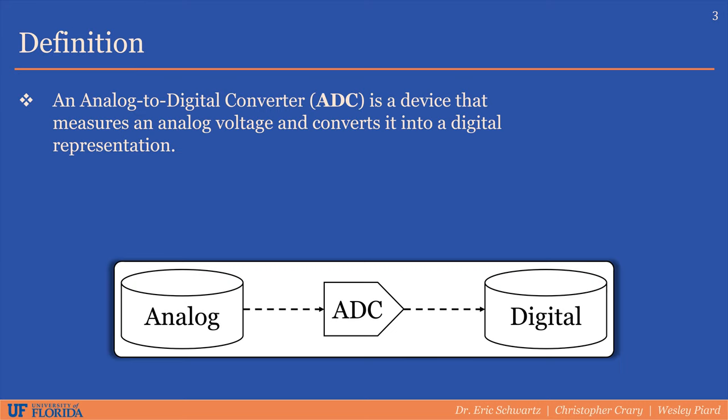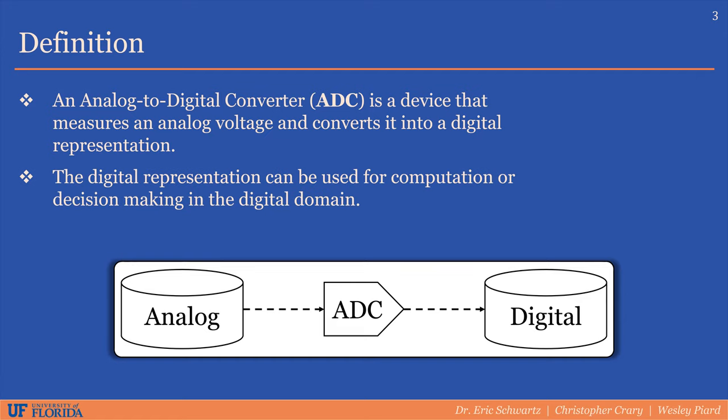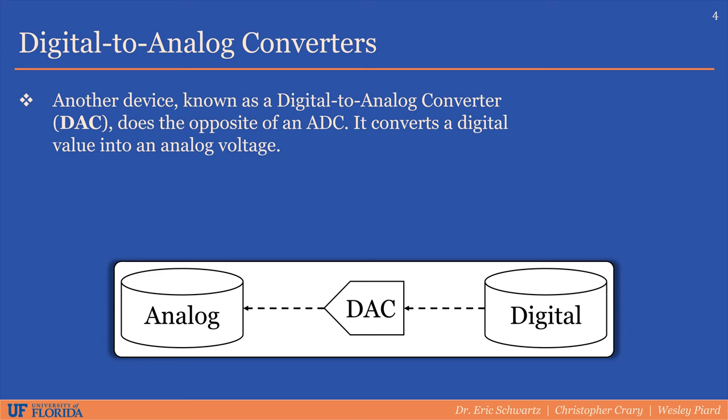An analog-to-digital converter is a device that measures some analog voltage and converts it into a digital representation, which can then be used by some computing system such as a microcontroller or microprocessor to perform calculations or make decisions for a program. Another device known as a digital-to-analog converter or DAC does the opposite of an ADC — it converts a digital value into an analog voltage. DACs will be discussed in another lecture.